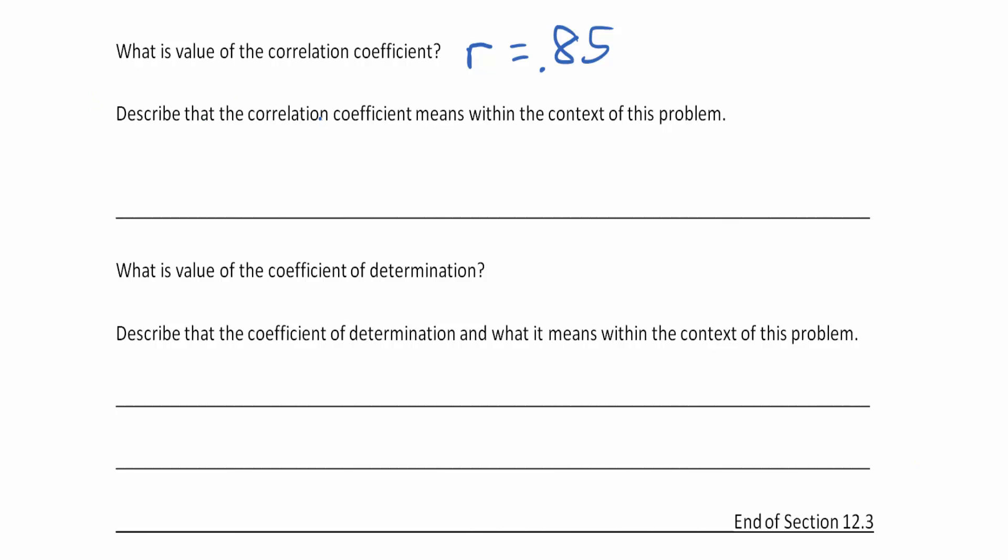Let's describe that correlation coefficient and what it means in the context of the problem. There is an 85 percent correlation between the x and the y, in this case between the degrees Fahrenheit and number of visitors.